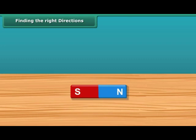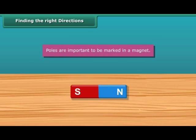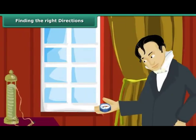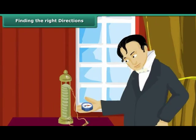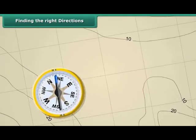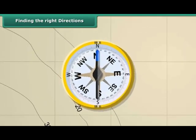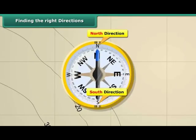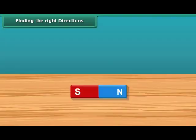Once you know about the poles of a magnet, you should also be able to mark the location of the poles. We all know that to find directions we use a compass. This compass has a needle that keeps moving in all directions, but when steadied always points to the north. This helps us in finding directions accurately. This is why we need to mark the poles of a magnet.